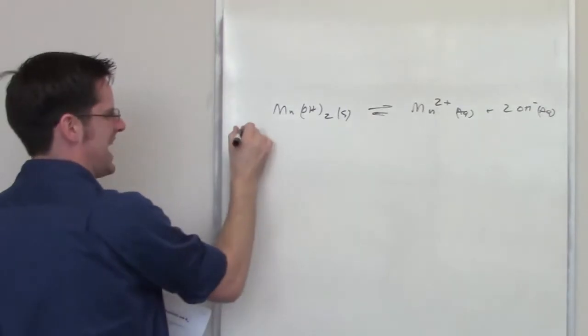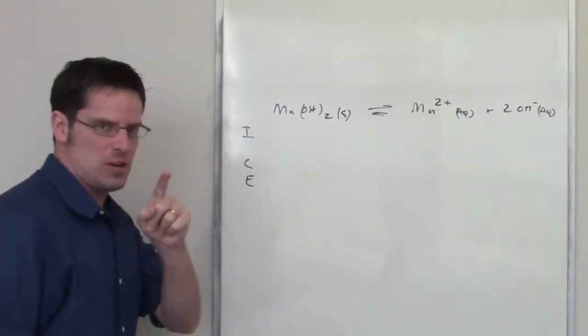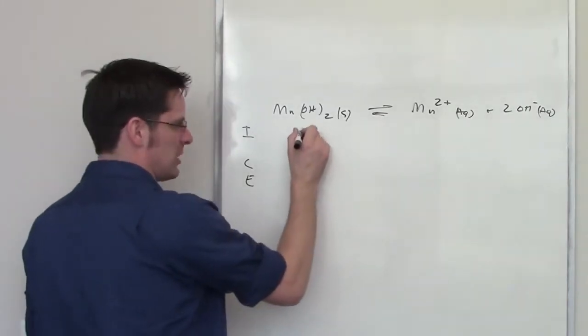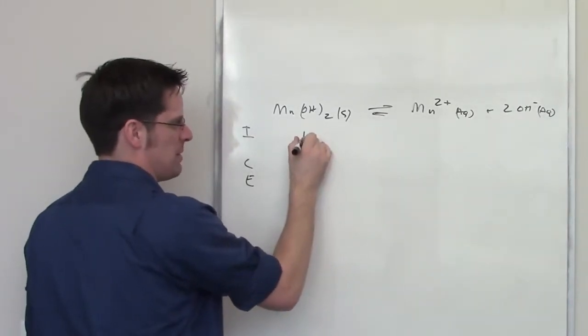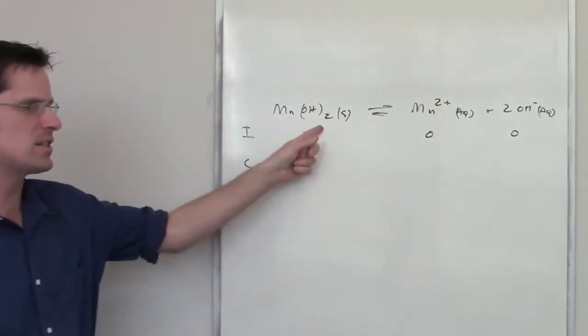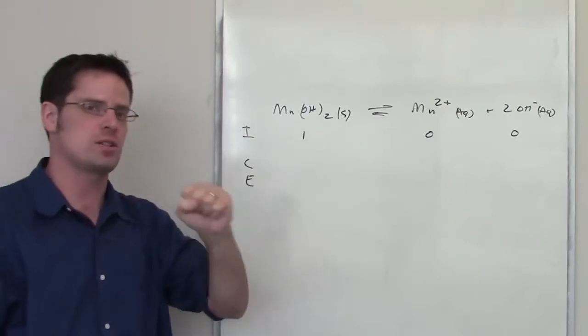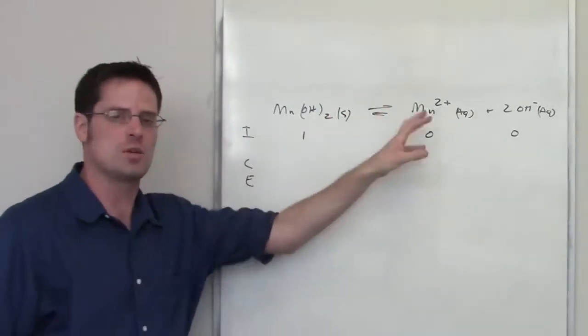To solve this problem, we're of course going to have to do an ICE table. As we've done before, at initiation for one of these things, I just set the concentration of this thing to be one and these things to be zero. That is right at initiation when I take my manganese hydroxide and chuck it into water, it's 100% manganese hydroxide right at the beginning. That's before any dissociation has occurred.